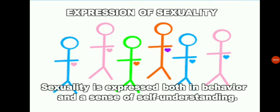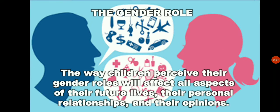The expression of sexuality is expressed both in behavior and sense of self-understanding. Physically, sexuality may be expressed through activities ranging from masturbation to sexual intercourse, and sexual intercourse may be expressed towards the opposite or same sex. Gender roles — the way children perceive their gender roles — will affect all aspects of their future lives, their personal relationships, and their opinions. At home, boys and girls are treated differently and given different toys and clothes. Parents treat their daughters more gently than their sons.